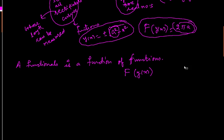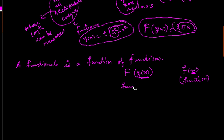We will denote it as F[y(x)]. For example, we write a function as f(x) where x is the domain element. Here y(x) is the domain element — this is my function and this is my functional. Having defined this functional, let us see what is the calculus of variation.